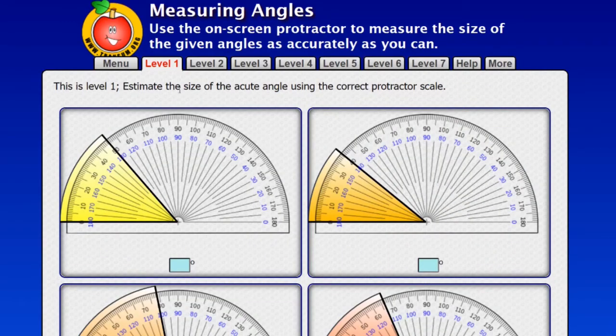And one of them goes from 0 to 180 from the left turning around to the right. And the other one goes from 0 to 180 degrees from the right turning towards the left. So here we go. We'll begin with level one. Now here the protractor has been put on top of the angle correctly.